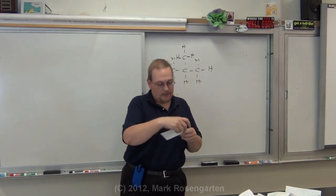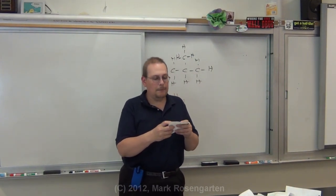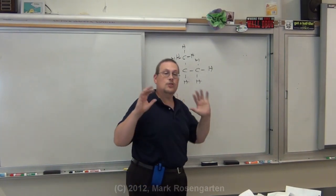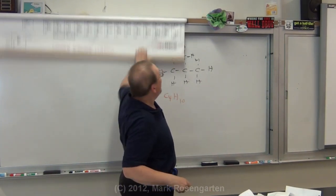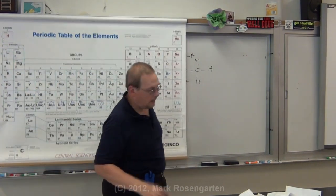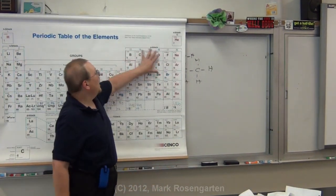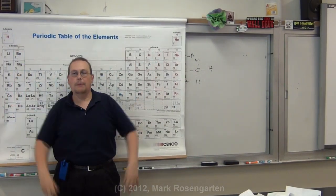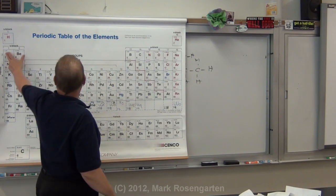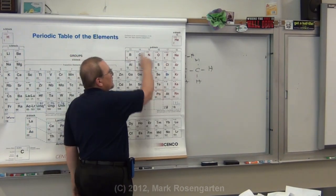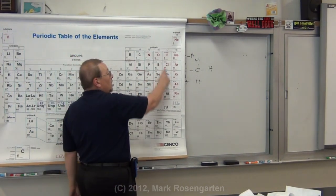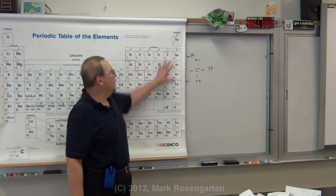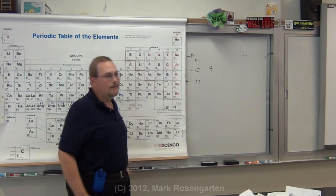How can you tell if something is a covalent bond? Here's the quick and dirty way: if you've got two non-metal atoms bonded to each other, it's a covalent bond. Period. If you've got hydrogen bonded to any one of these, it's covalent. If you've got any one of these bonded to any other one of these, it's covalent. Period. End of story. Non-metal to non-metal — covalent.